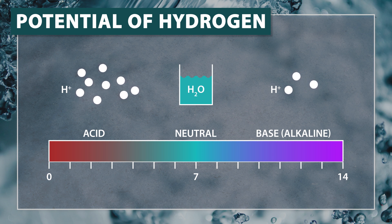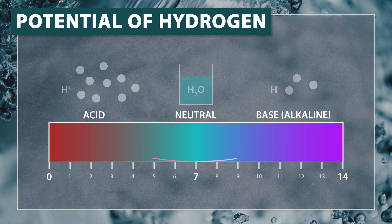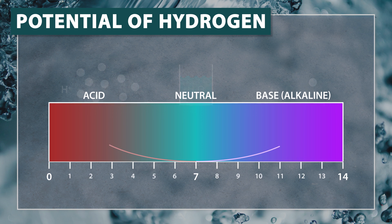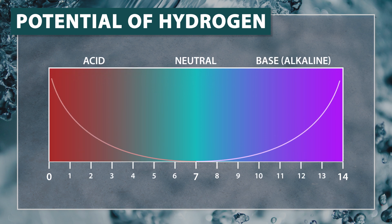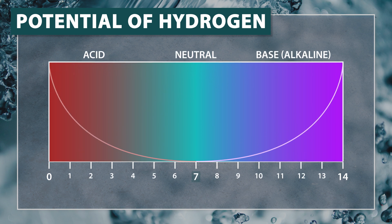The pH scale is not linear like the increments on a ruler, but instead is a logarithmic scale where each value increases by a magnitude of 10. A solution with a pH of 8 is 10 times more alkaline than a neutral solution, or pure water, and a solution with a pH of 9 is 100 times more alkaline than water.